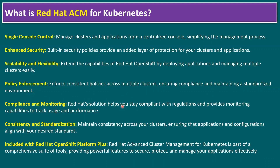Red Hat ACM helps you stay compliant with regulations and provides monitoring capabilities to track usage and performance. It also maintains consistency across your clusters, ensuring applications and configurations align with your desired standards. ACM is included with the Red Hat OpenShift Platform Plus license only, and it is part of a comprehensive suite of tools providing powerful features to secure, protect, and manage your applications effectively.